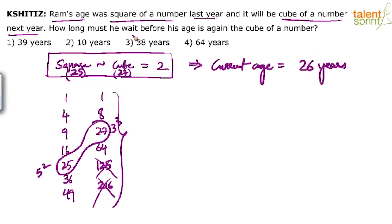Now, how long must he wait before his age is again the cube of a number? For how many years must he wait before his age is again the cube of a number?